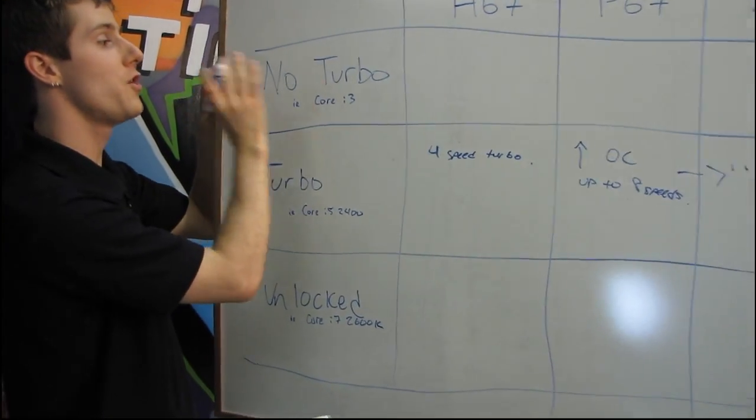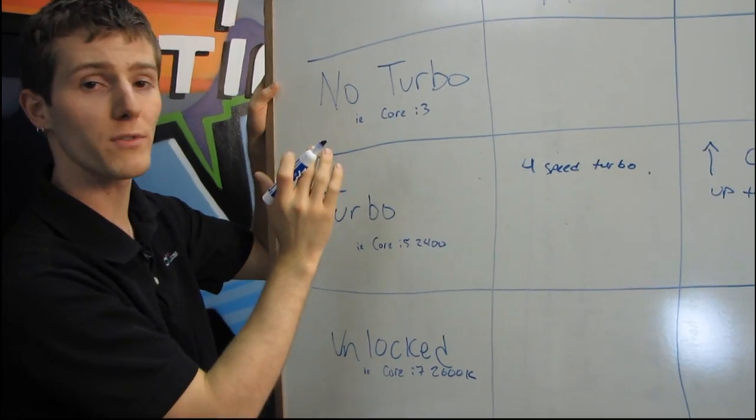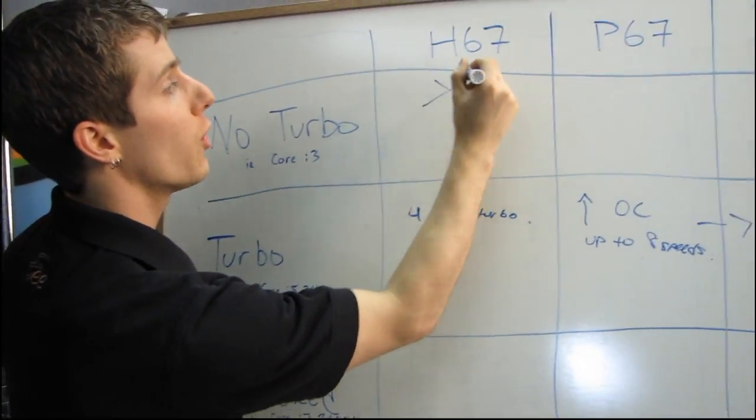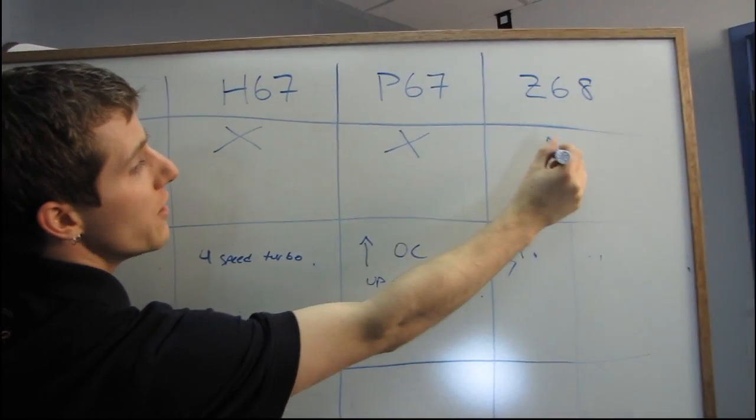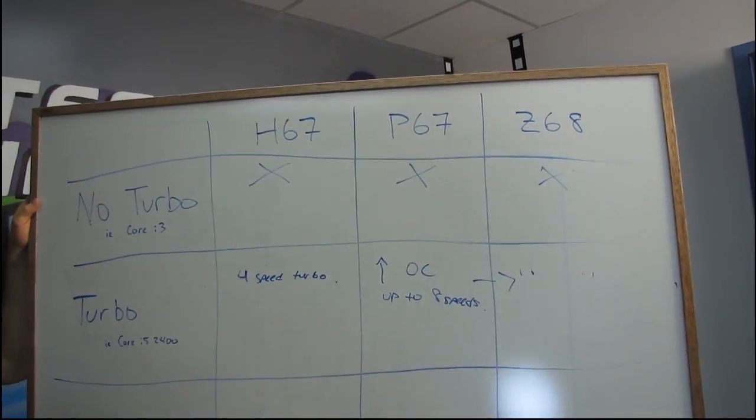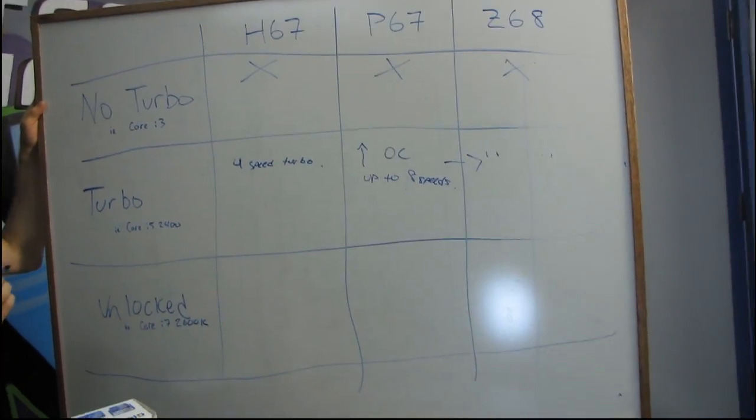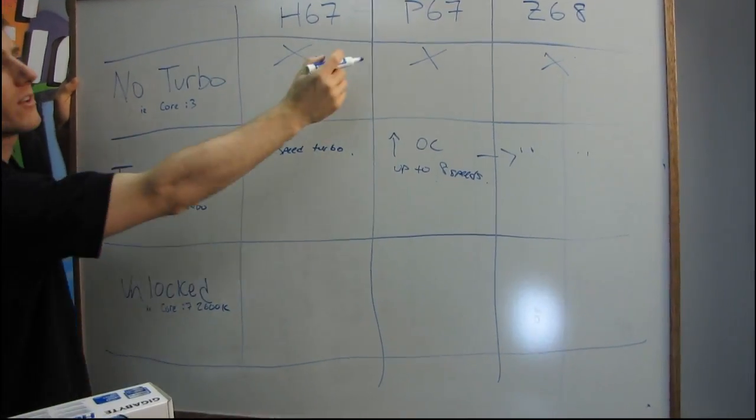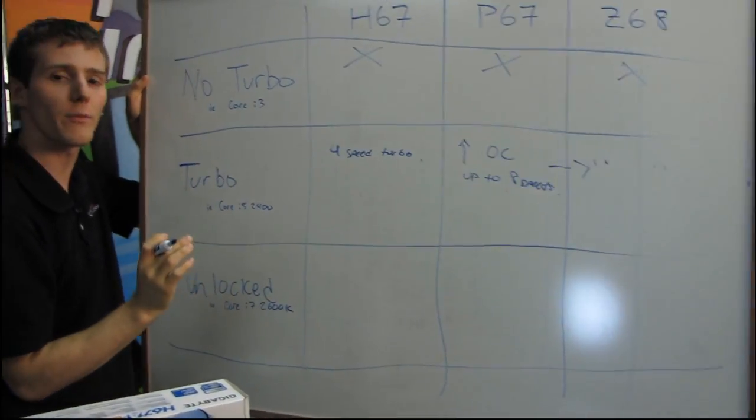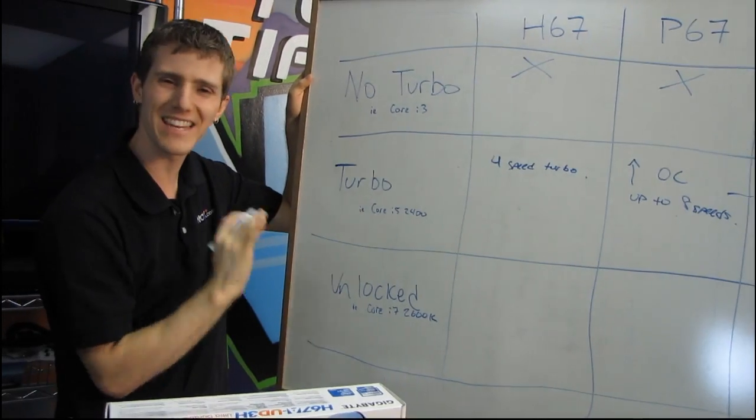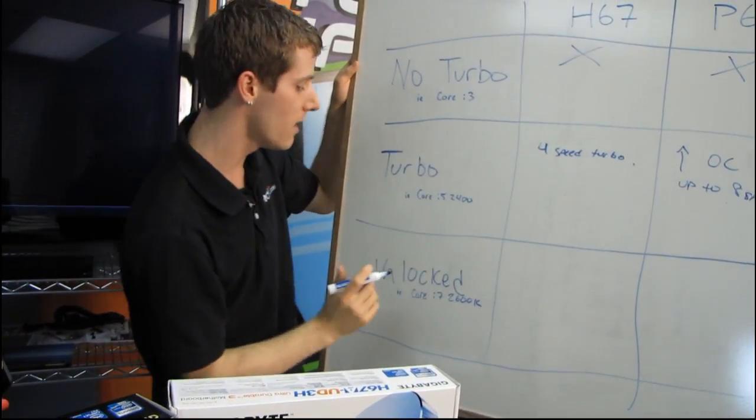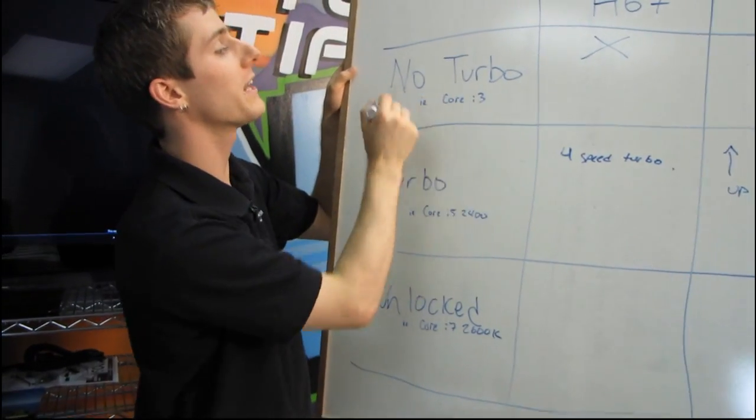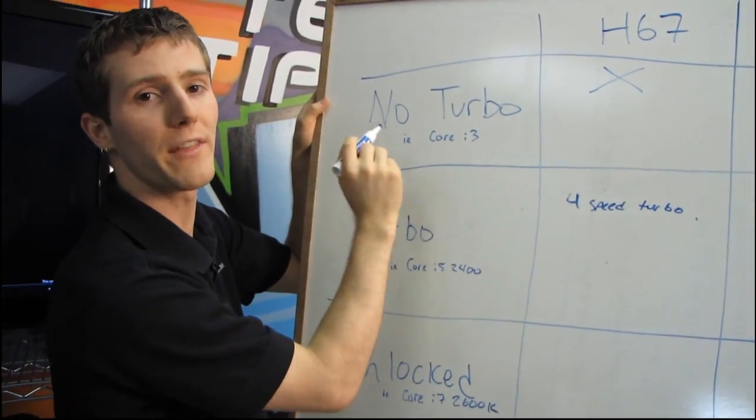Then there are completely non-turbo processors. In terms of overclocking, we have no support on H67, no support on P67, and no support on Z68. You can overclock probably about five percent if you turn up the base clock, but it's really not recommended because you can do nasty stuff like corrupt your hard drive. Just don't do it. An example would be like a low-end Core i3.